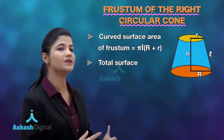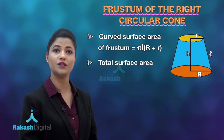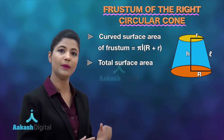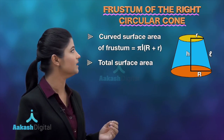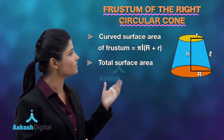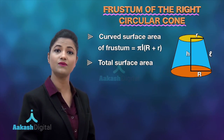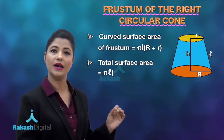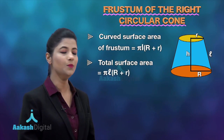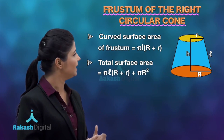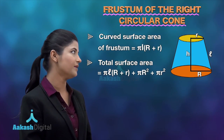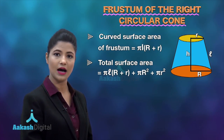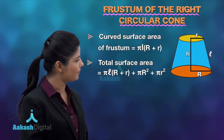Next, we have the total surface area of the frustum, which is obtained by adding the area of the two circular bases to the curved surface area. It is equal to πl(R + r) + πR² + πr².